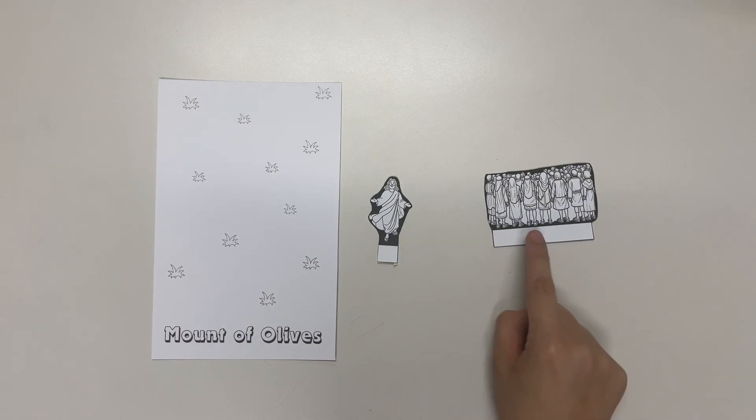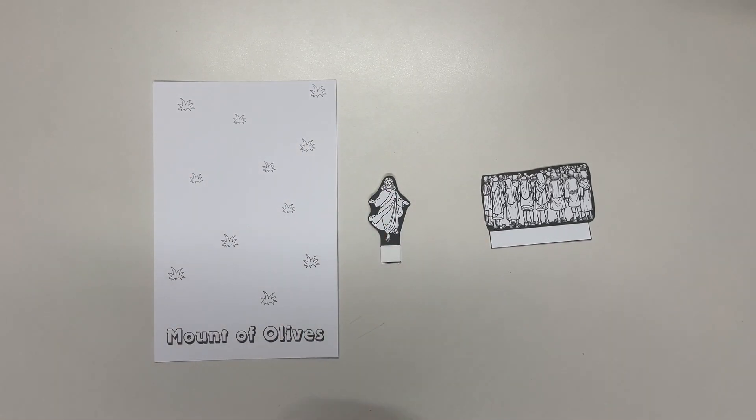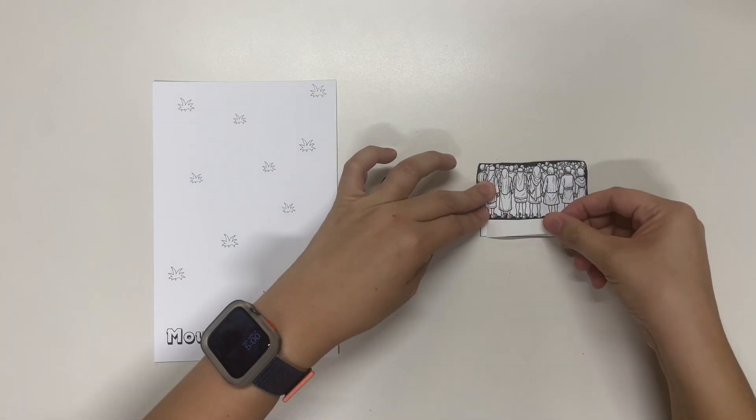Now, first off, what we want to do is we want to put some double-sided tape on the flaps below the Jesus ascending and the crowd.